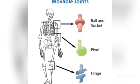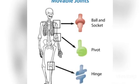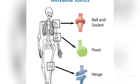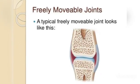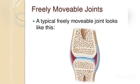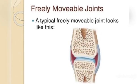Examples of movable joints include the ball and socket joint, pivot joint, and hinge joint — all of which are freely movable joints.